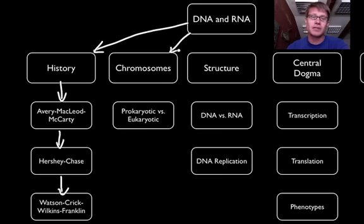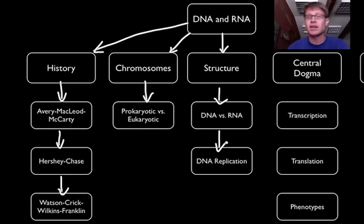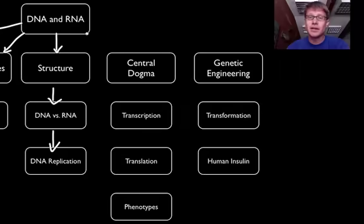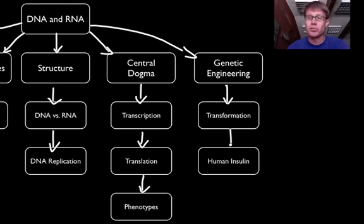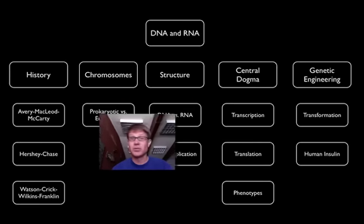Next I'll talk about how DNA is organized in chromosomes, both prokaryotic and eukaryotic. We'll talk about the structure of DNA and RNA, mostly how they're different. And then how DNA makes copies of itself, how we'll translate it into proteins, which then makes you. And finally we're going to talk about this brave frontier of genetic engineering, and how we can do things like transform bacteria to make important things, especially for diabetics like human insulin. So that's a lot to do — we better get started.